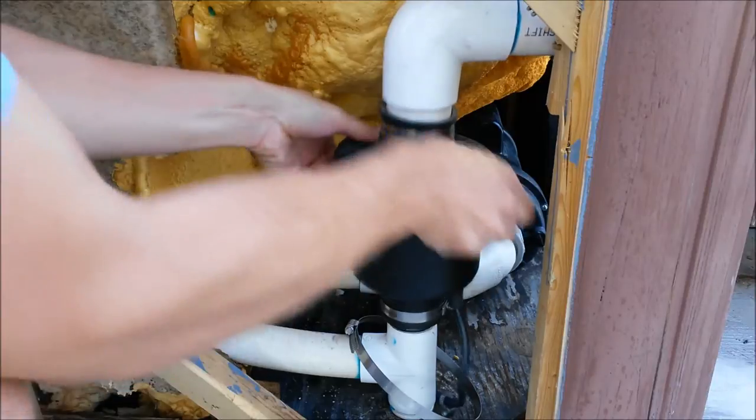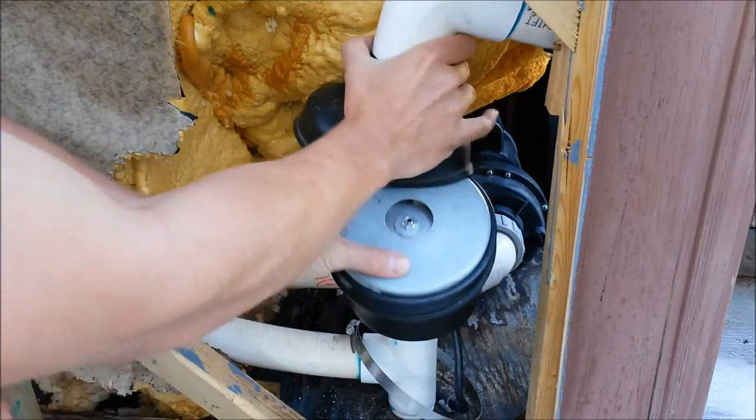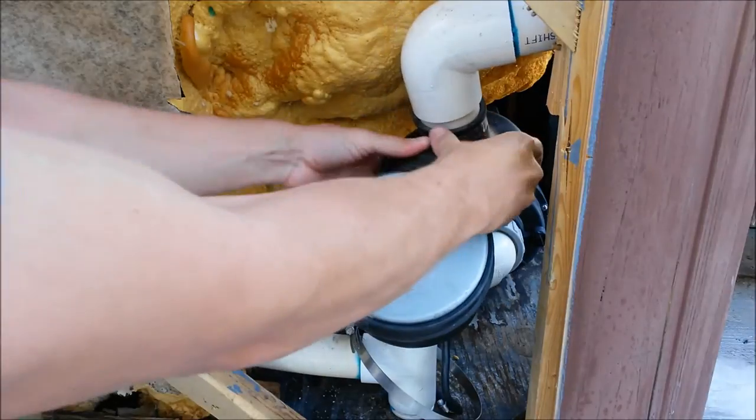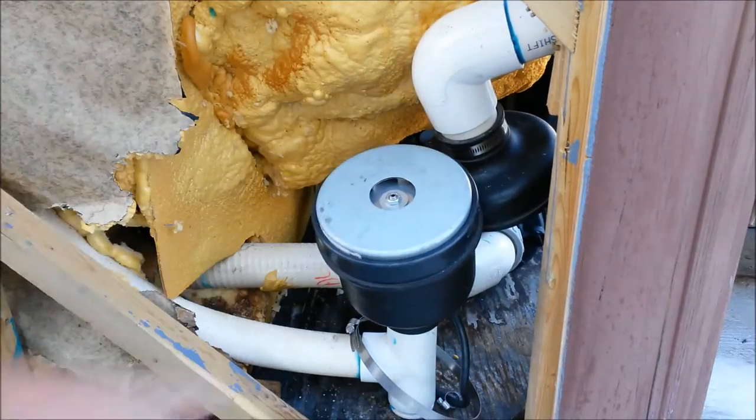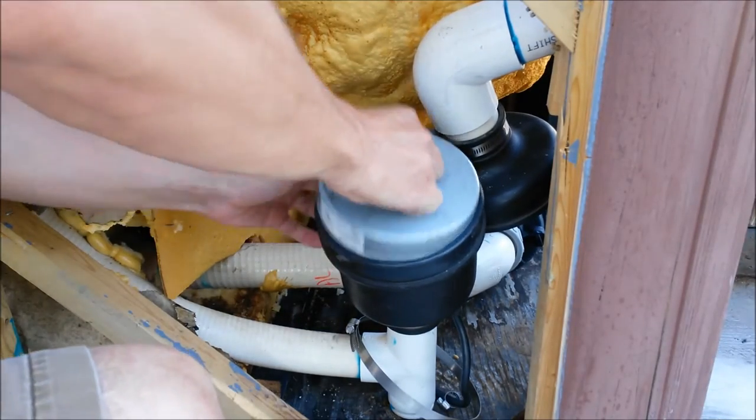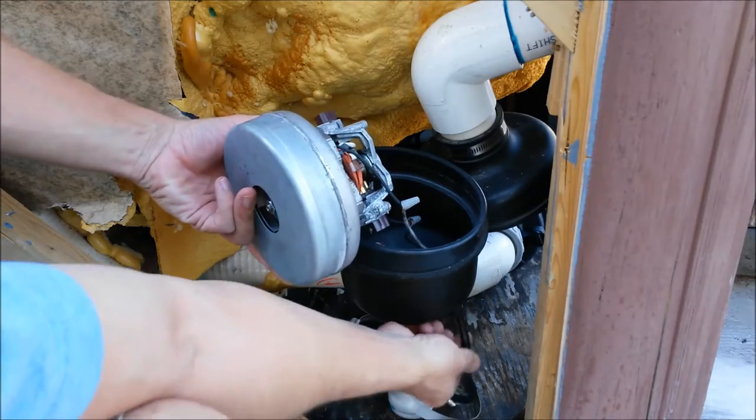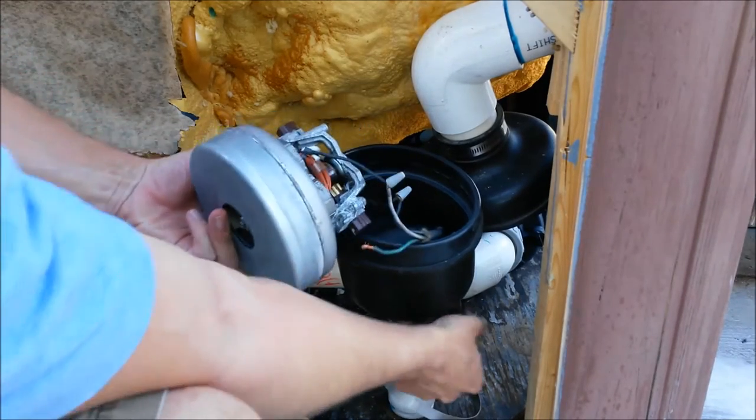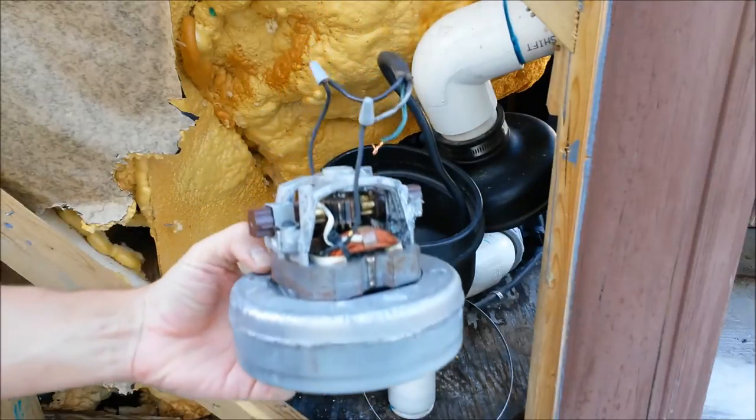The top just pulls right off and kind of slide it over, slide the top over and then this is our actual blower motor right there. It just pulls out and since we loosened this wire nut down here, you can just pull that out. And there you have your blower motor.